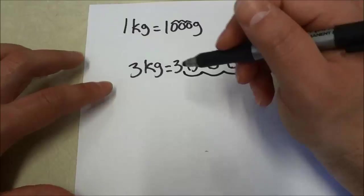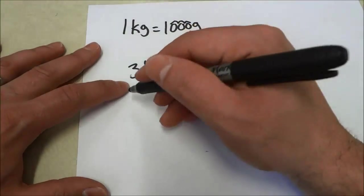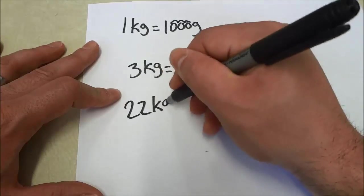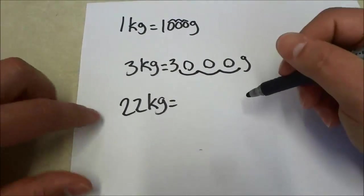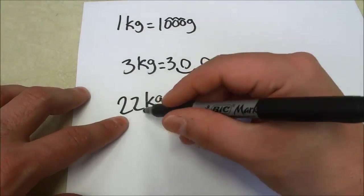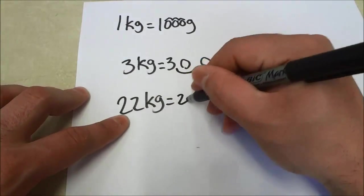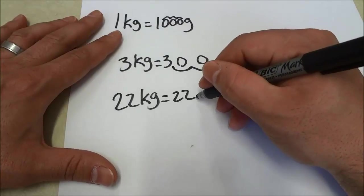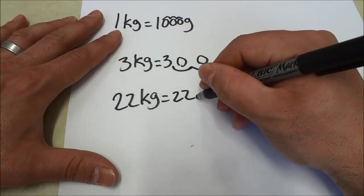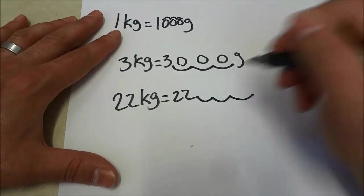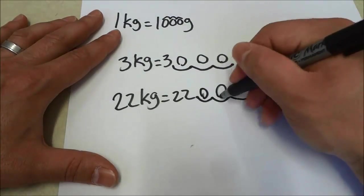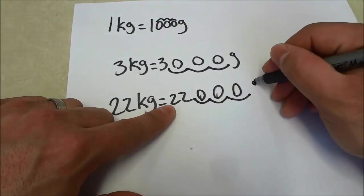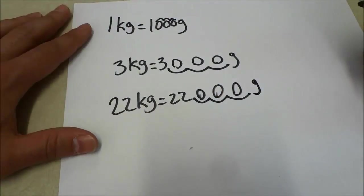Now we're going to try a number that is a little bit bigger. So once again we're going to try 22 kilograms is equal to a certain number of grams. So we're going to start off by writing the 22 that you see right there. Then we're going to move the imaginary decimal three spaces to the right. One, two, three. We're going to fill those spaces in with zeros. And as you can see it says 22,000 grams. And it's literally that simple.